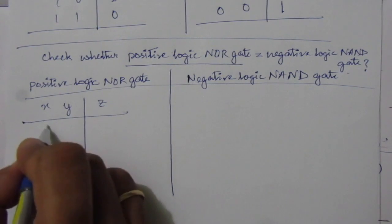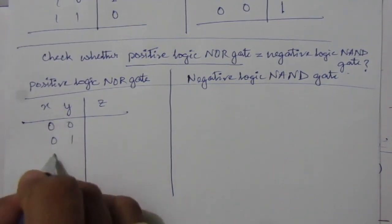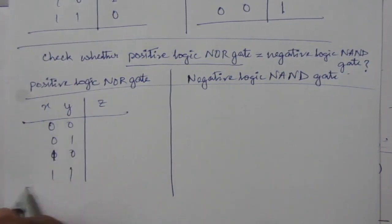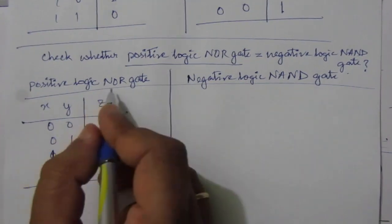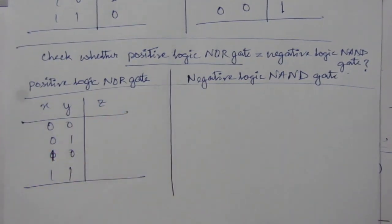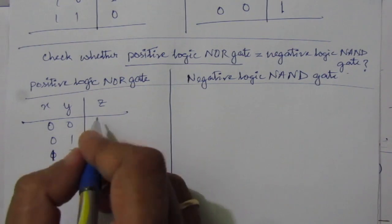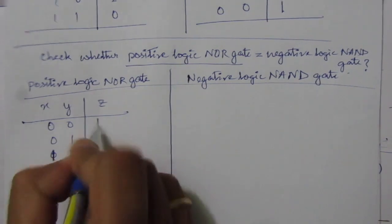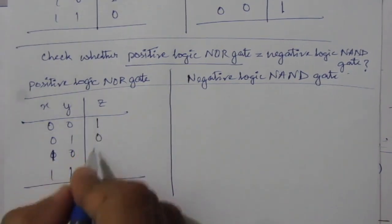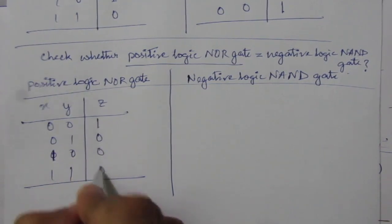For positive logic, the combinations are 0,0 — 0,1 — 1,0 — 1,1. For the NOR gate output: 0 OR 0 is 0, so after inversion we get 1. 0 OR 1 is 1, so after inversion it will be 0. Similarly for 1,0 we get 0, and 1 OR 1 gives 0.